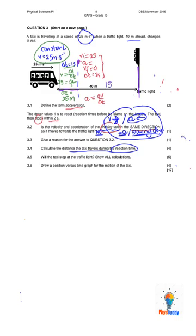So if he can stop in 15 meters from the time when he starts braking — this is the part where he is braking — his initial velocity is 25 and we want to know when he stops. They say that he stops within two seconds. If we can work out how many meters it takes him to stop, we will be able to work out whether he stops at the traffic light, further than it, or before it.